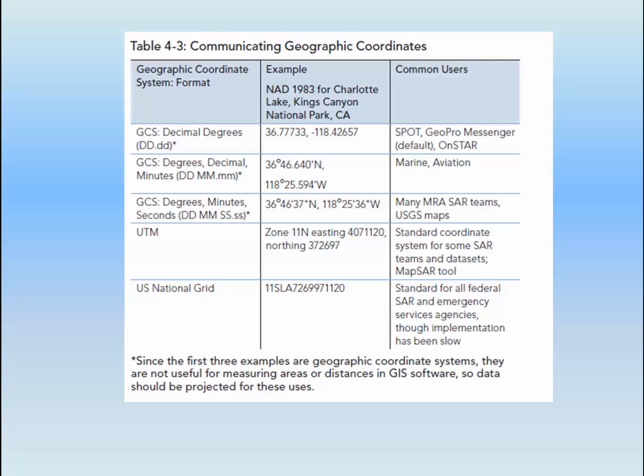Let's wrap up this section by going over the five main formats for coordinate systems and where you might see and use them. The first three are geographic coordinate systems, and the last two are types of projected coordinate systems that are commonly used. In addition to the coordinates, it's also critical that you give the datum, such as North American Datum 83 — almost always referred to as NAD 83 — or World Geodetic System 84, WGS 84.